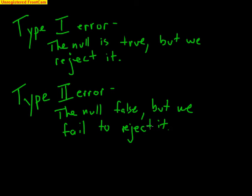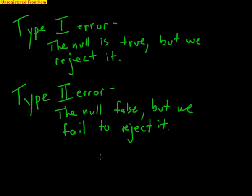So if you think about these two types of errors: a Type I error — the null is true but we reject it. If you have a null that's true, you should be keeping it, not rejecting it — that's the error. A Type II error — the null is false but we fail to reject it. If the null is false, you should be rejecting it, but the error is that we fail to reject it.